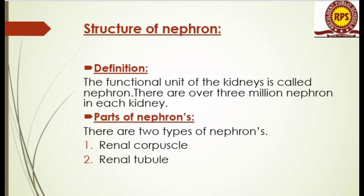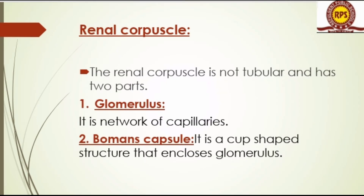There are two parts of a nephron: the renal corpuscle and the renal tubule. The renal corpuscle is not tubular and has two parts. The first is the glomerulus, which is a network of capillaries.